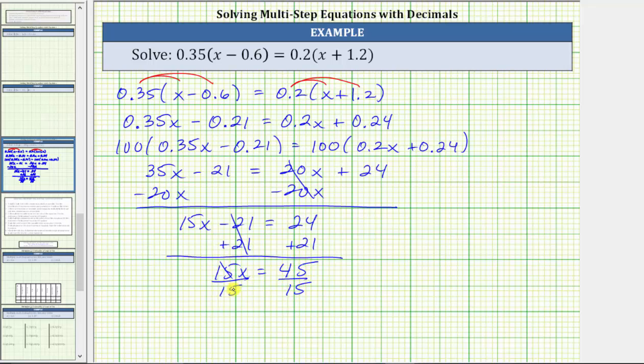Simplifying, 15 divided by 15 is 1. 1 times x is x. We have x equals 45 divided by 15 is 3.